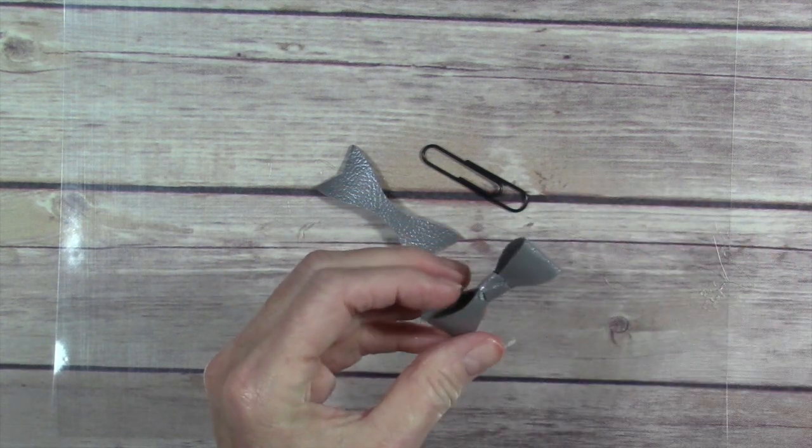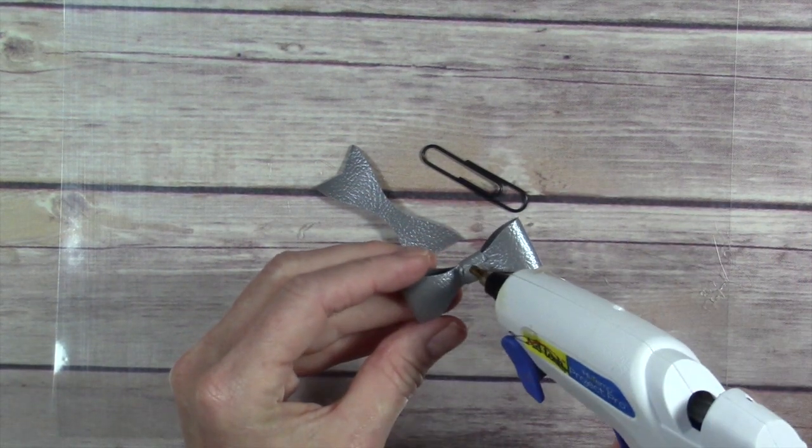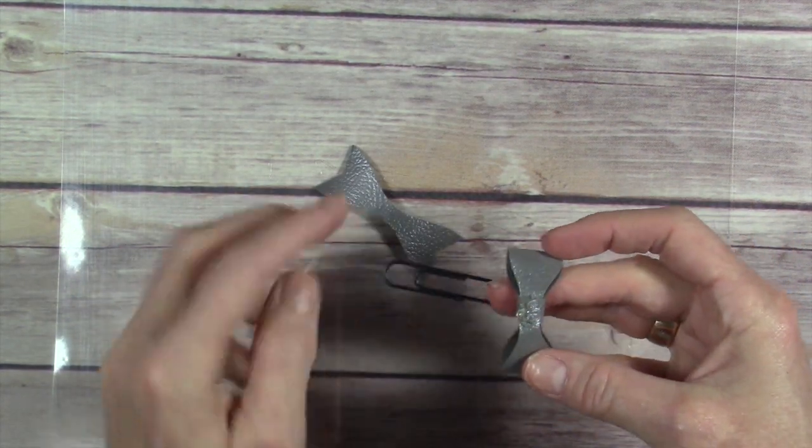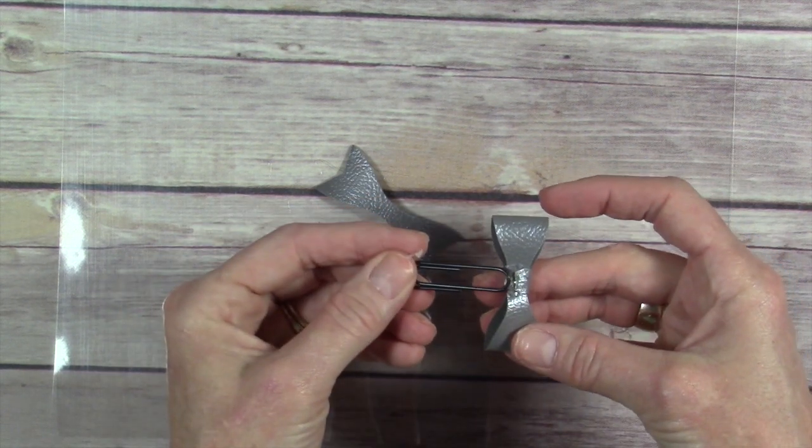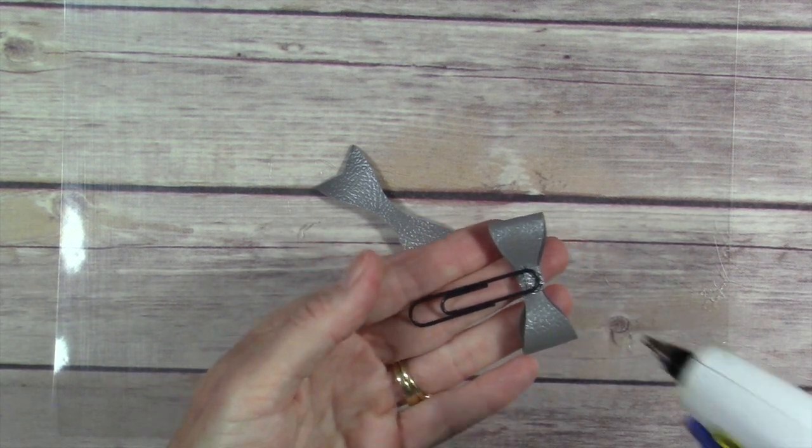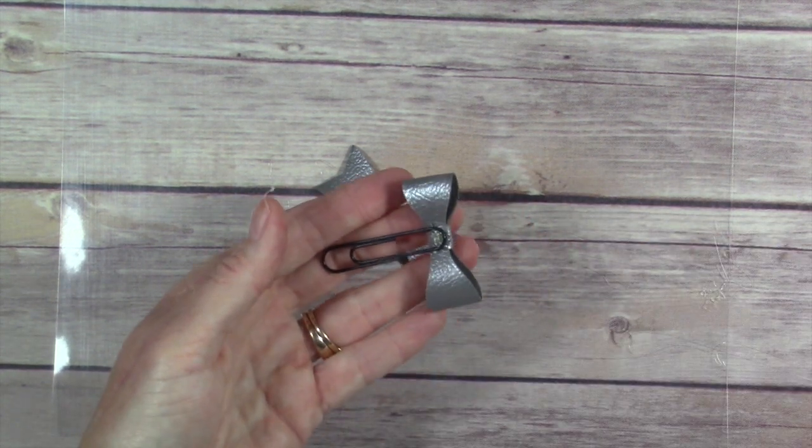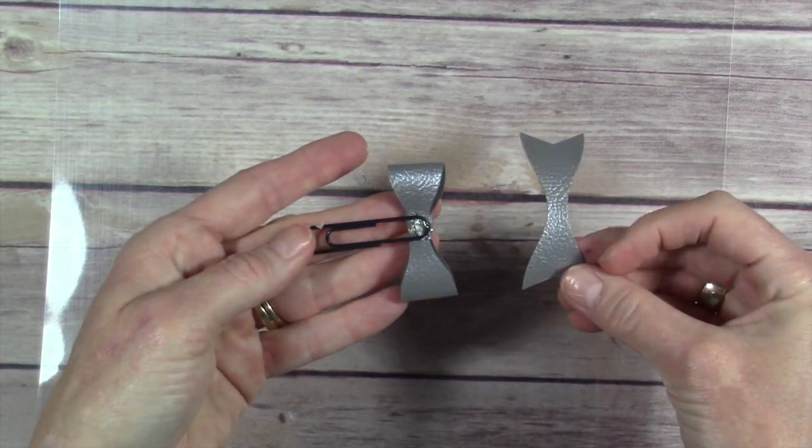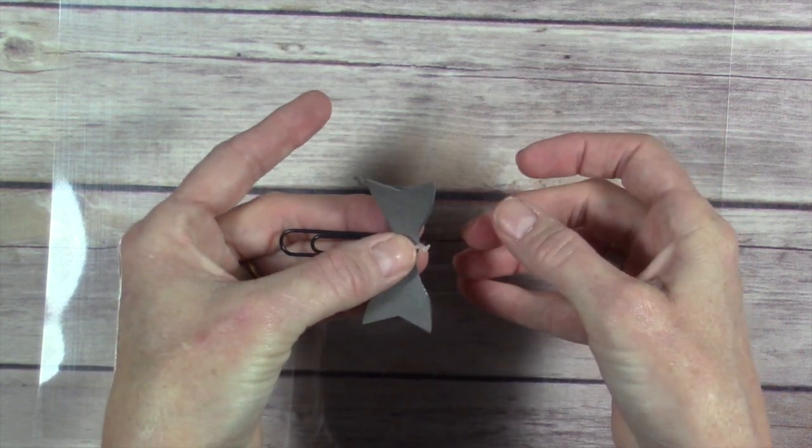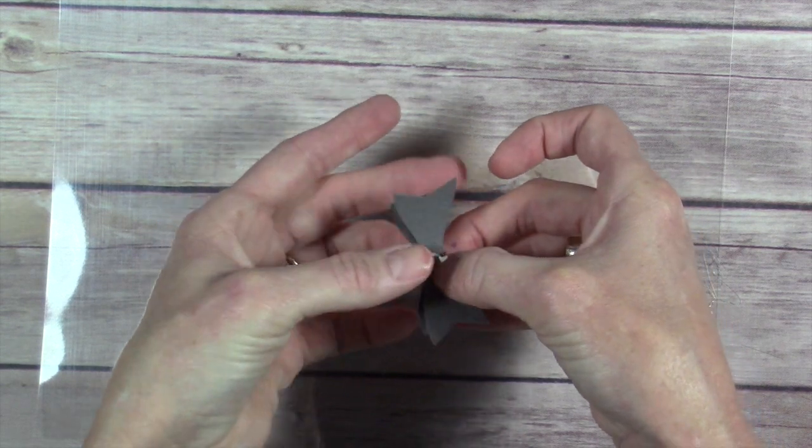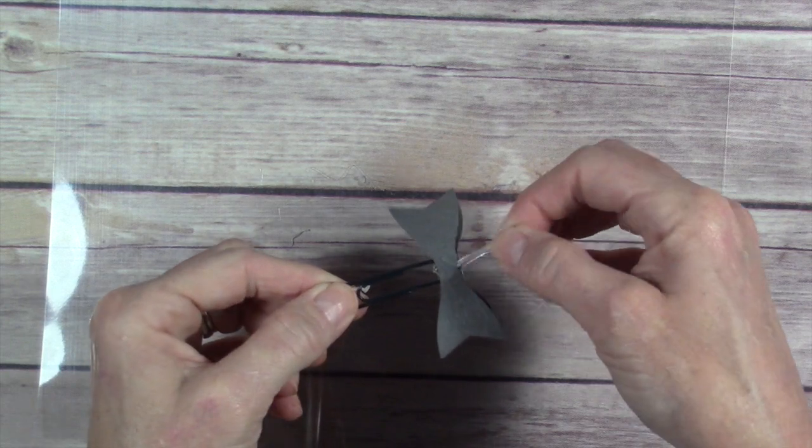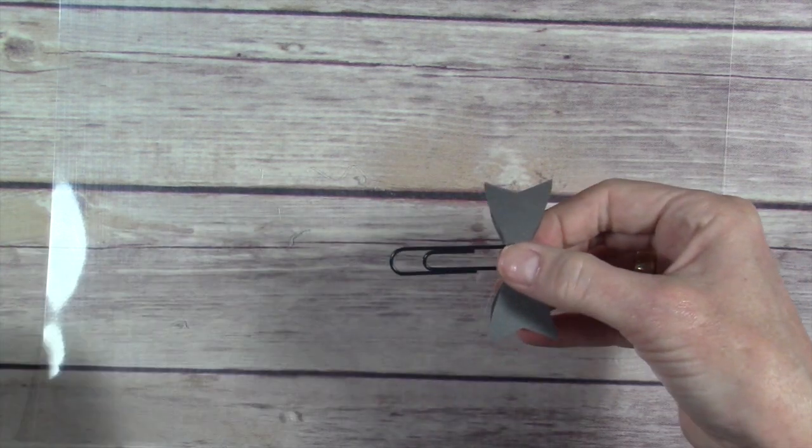Now we're going to put another dollop of glue on the back side. And apply our paper clip. You don't want to apply the end with the two sides. You want to apply the clear end. We're just going to add that right there. Now we're going to put one more dollop of glue just to make sure we've got it nice and secure. And we're going to take this pebble side down and place it centered over the back.